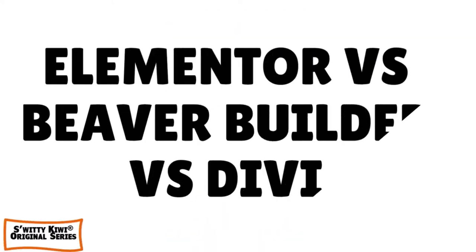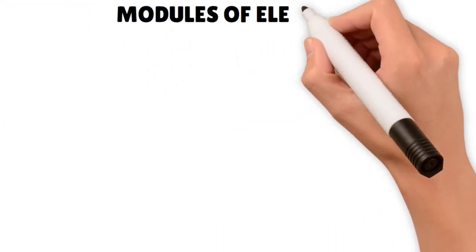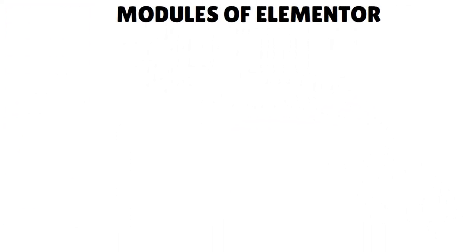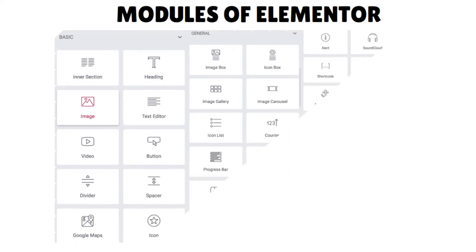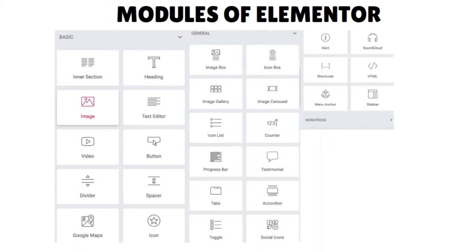Criteria number two: modules. Each of these three page builders comes with dozens of built-in modules and support for various add-ons that add many more modules. The free version of Elementor comes with a limited number of modules, but for a normal user the free elements are more than enough — unless you have a big project, you don't really need the paid version.